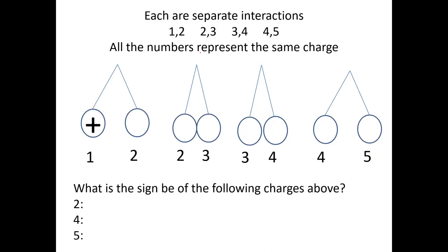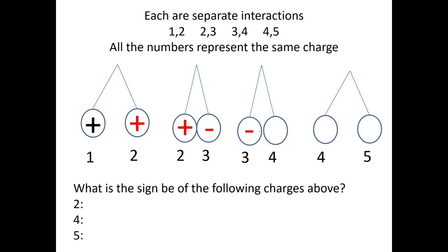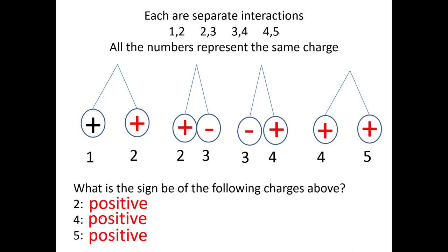This next one, you're going to see these are all interactions that are separated — they're not interacting with each other. If one is repelling two, charge two is going to be positive. That positive is attracting the next one, so it has to be negative. That negative is attracting, so the next should be positive. Then positive repels positive. The answers here — charges two, four, and five — would all be positive.